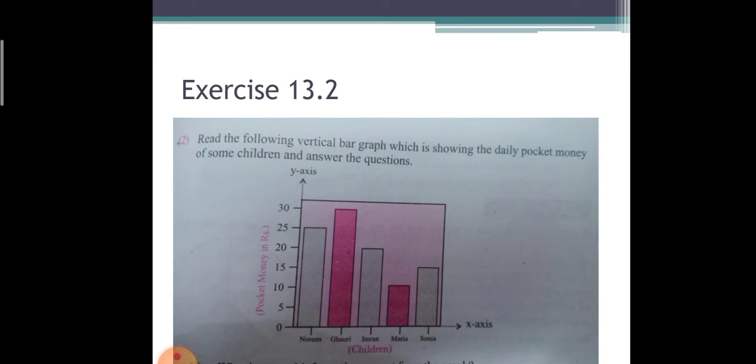Vertical bar graph, okay? Look, it's vertical because the x-axis is shown vertically here. There are some children's names - five children: Noreen, Gauri, Imran, Maria, and Sonia.